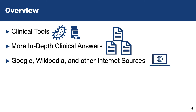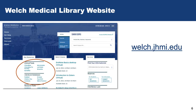We'll also talk briefly about when using Google, Google Scholar, and Wikipedia are most valuable and when they should be avoided. Last, we'll talk about some resources that you can use to find patient education handouts. Let's get started.